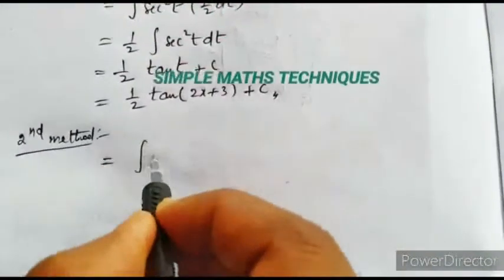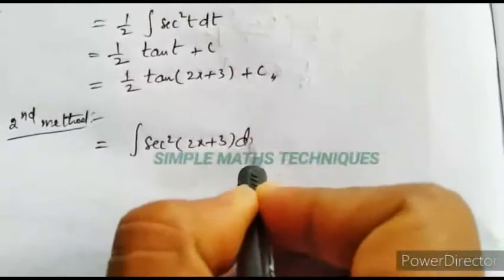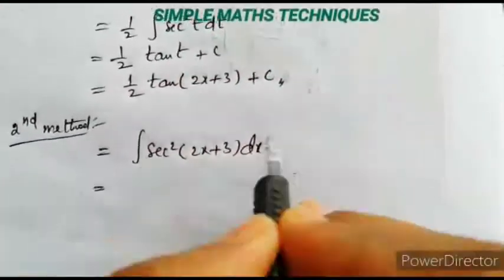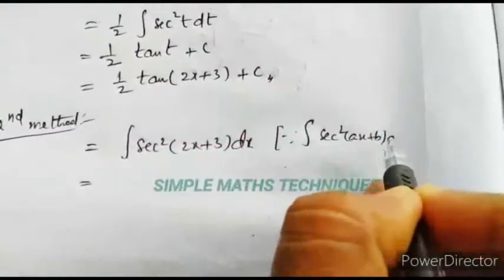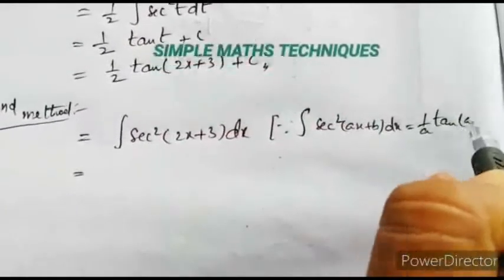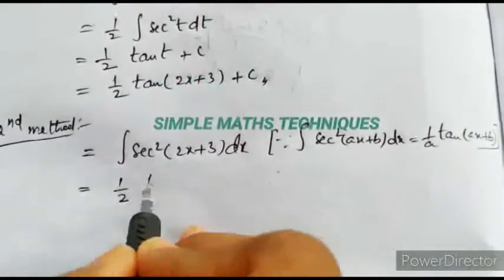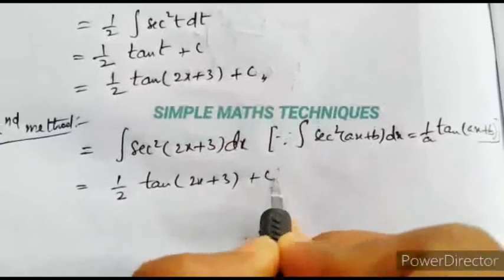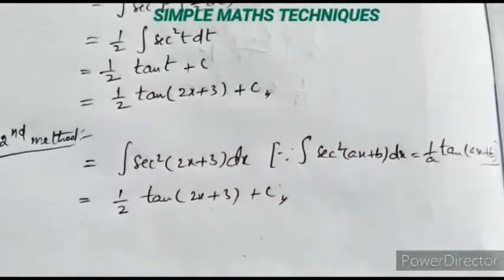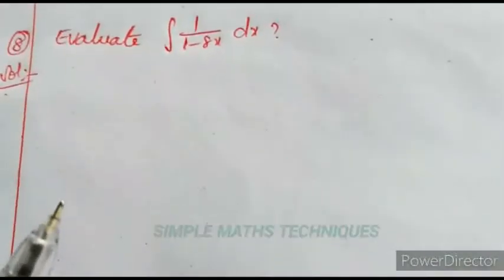Second method: given integration of sec²(2x+3) dx, using the formula — integration of sec²(ax+b) dx = 1/a · tan(ax+b) plus c. Here a = 2, so 1/2 · tan(2x+3) plus c. This is the solution.